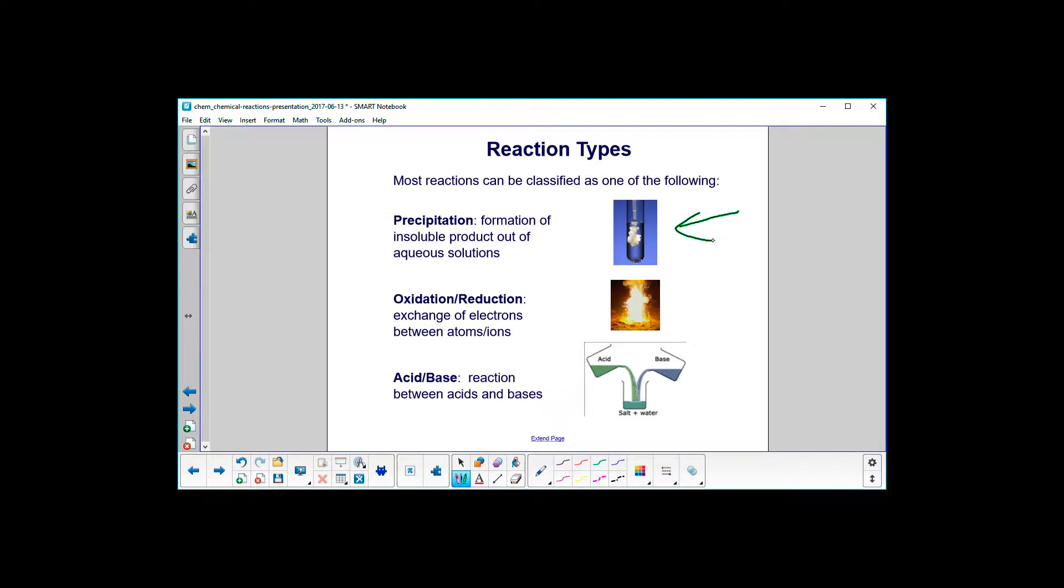The solid is insoluble and we call it precipitation. Second one is oxidation reduction, that's the exchange of electrons between atoms and ions and you can see from the picture there a lot of energy can be released in oxidation reduction reactions.